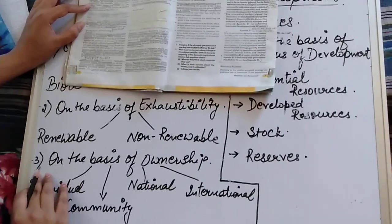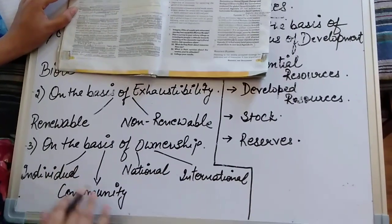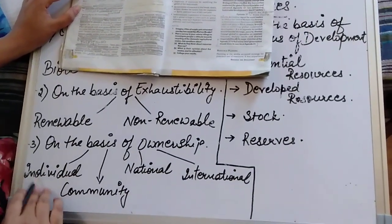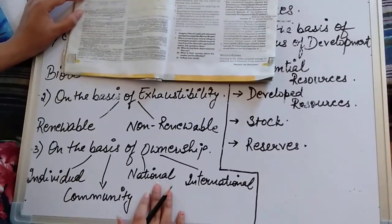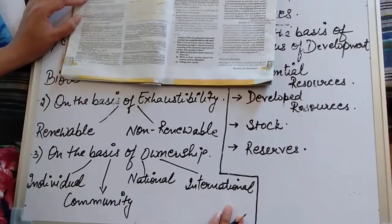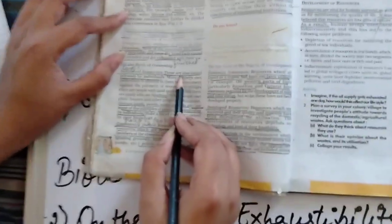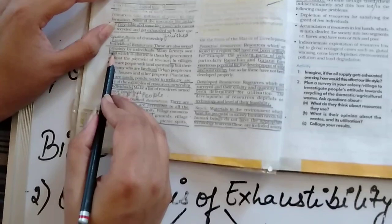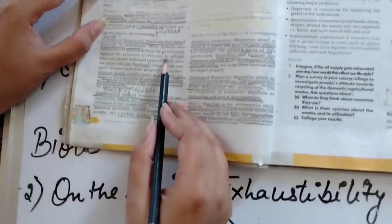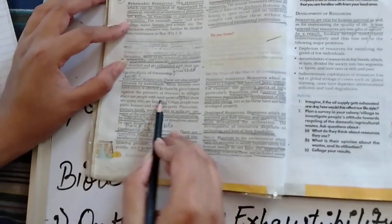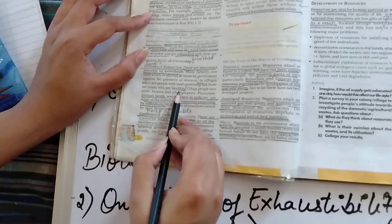Thirdly, we can classify the resources on the basis of ownership. It can be divided into four forms. One is individual resource. Second is community resource. Third is a national resource. And fourth is international resources. Individual resources are those which are owned privately by individual. Individual means single person.